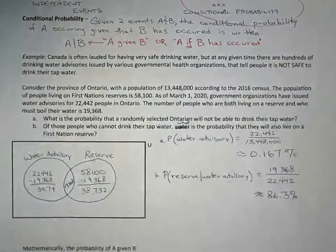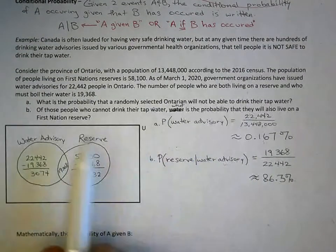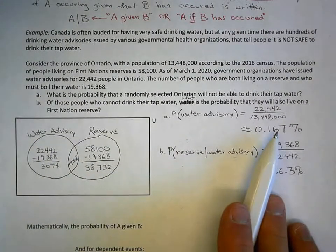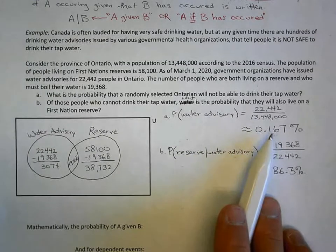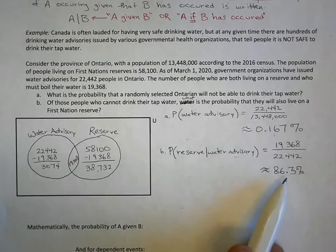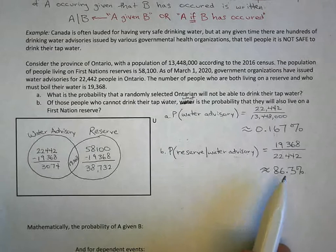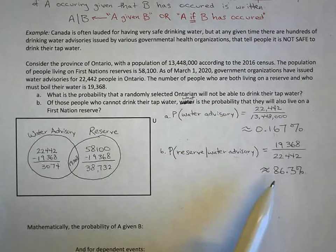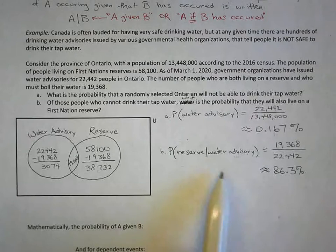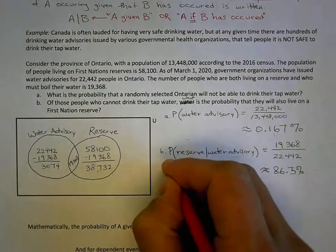Now we see what a staggering issue this is. Just think about how we think of Canada — we have great water, and only 0.2% of Ontario residents have bad water. But if you zoom in on people living on reserve, 86% of people living on reserve have water they can't drink. That's horrible. It really shows we have a fundamental problem in Ontario and Canada about providing water for First Nations communities — something I hope in our lifetime we can fix.